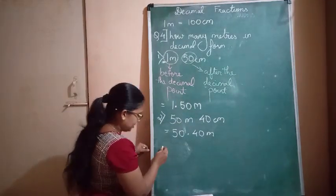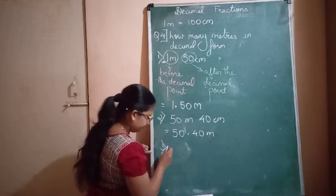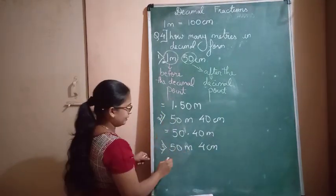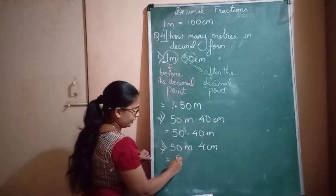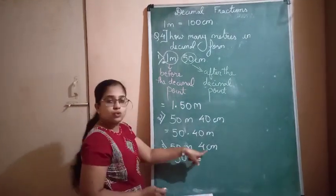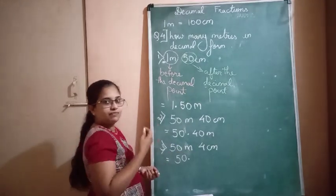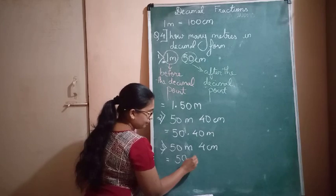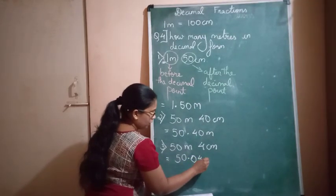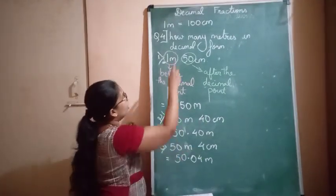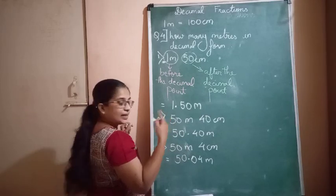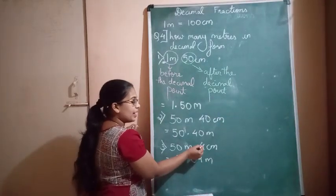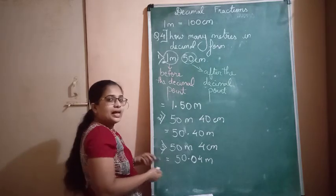The third question is 50 meters and 4 centimeters. Here you follow the same pattern. You get the answer as 50. — but there is only 4 centimeters. Remember: 1 centimeter is equal to 0.01 meters, so 4 would go after the decimal, but before 4 you also have to write a zero. Since 1 meter equals 100 centimeters there are 2 digits after the decimal, so you must fill up with a zero to make 2 digits. The answer is 50.04 meters.